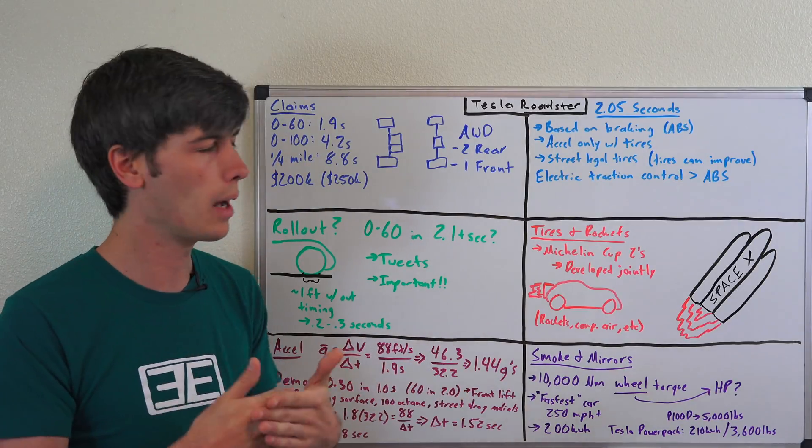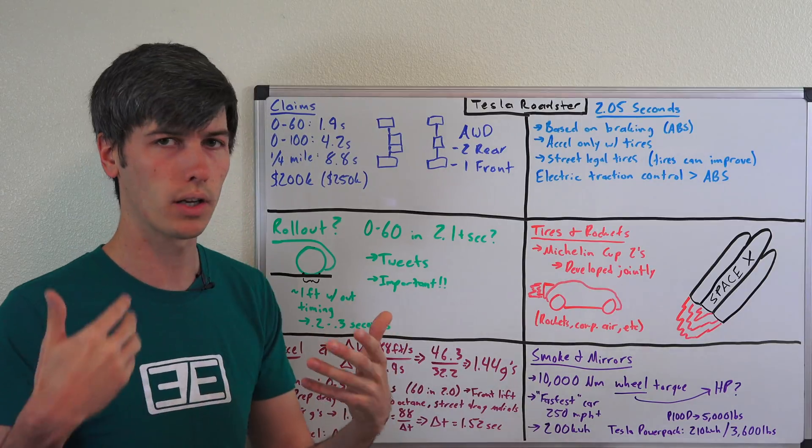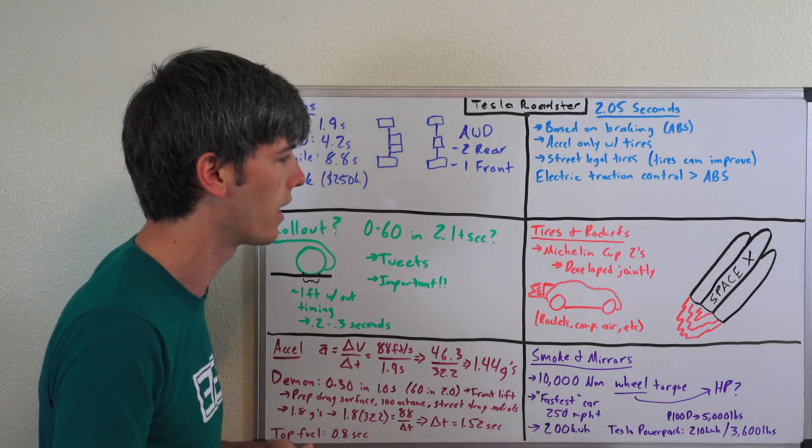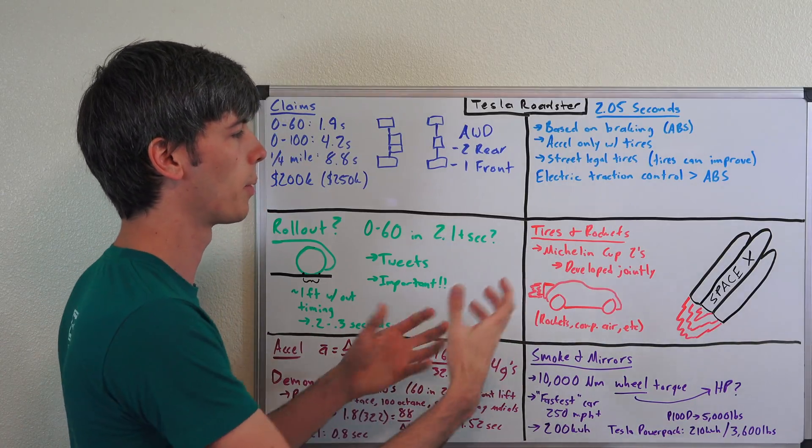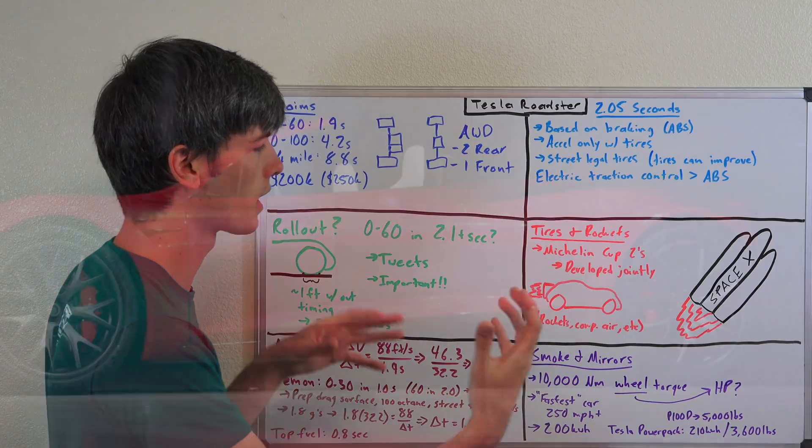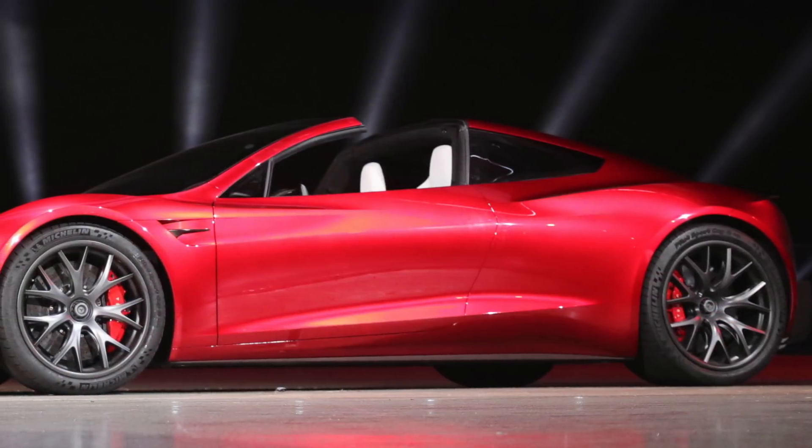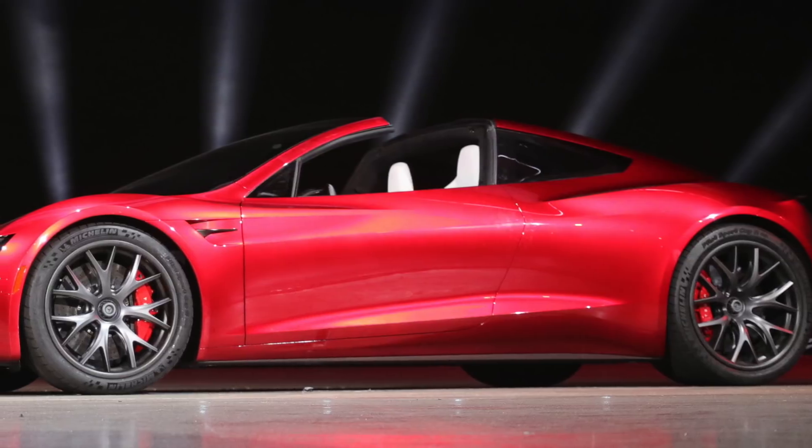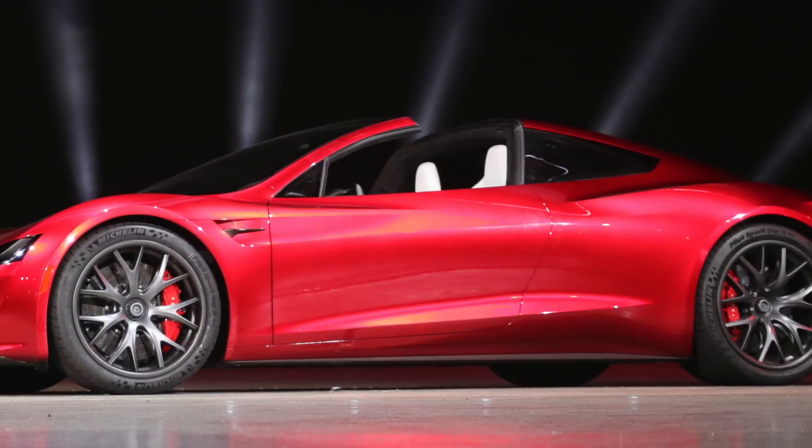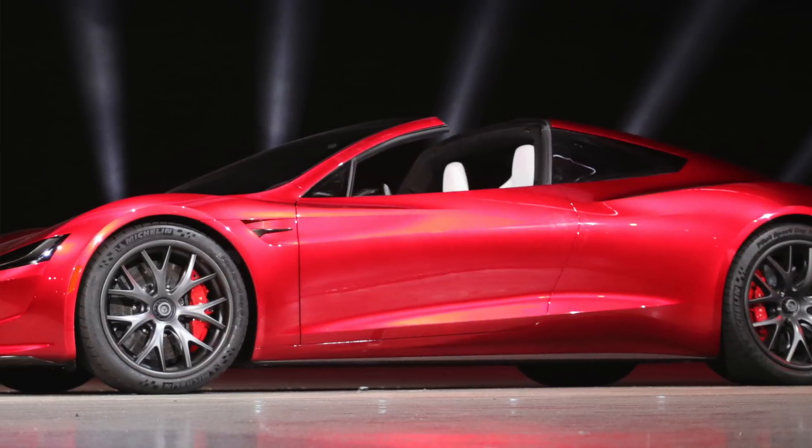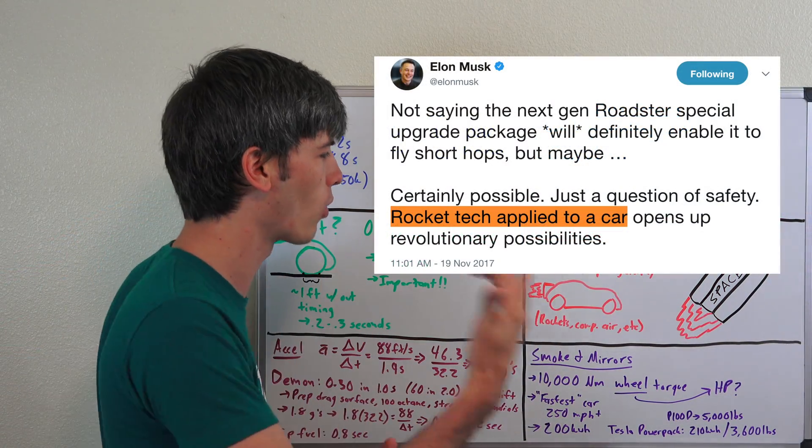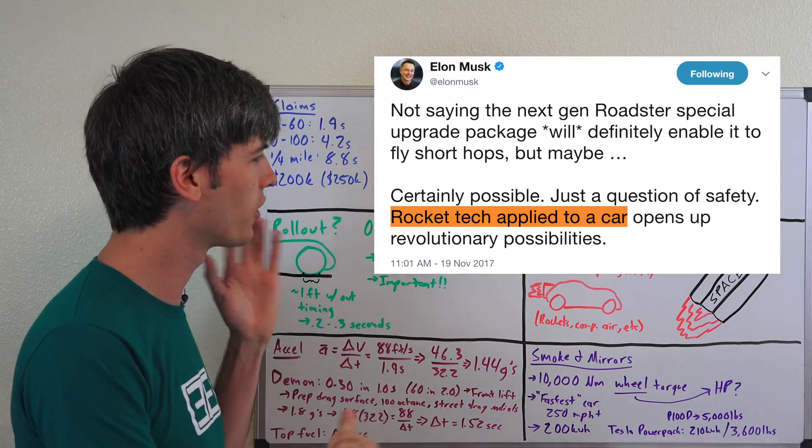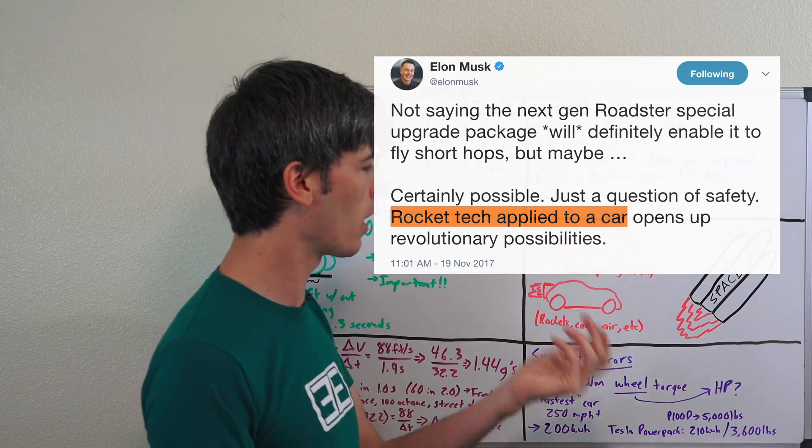The Nitto tires were a combination of Dodge's working with Nitto to develop this tire that was specific to that car. So Tesla could be doing the very exact same thing to help improve the Cup 2s with Michelin, come out with a very specific compound which for this specific car works perfectly and gives it the best acceleration possible, beating that 2.05 second claim. Now there is also a tweet out there where Elon Musk hints at putting rockets on cars, and whether or not he's joking is besides the point.